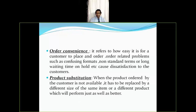Order convenience refers to how easy it is for a customer to place an order. Order-related problems such as confusing formats, non-standard terms, or long waiting times cause customer dissatisfaction. For example, Amazon has created a very user-friendly platform where customers can log in, browse, and place orders easily — that is the attraction of Amazon. Order convenience is really important in how companies design their order systems.